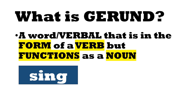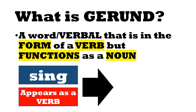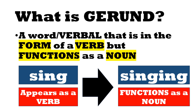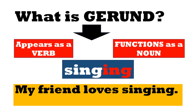So you have the word 'sing.' Generally it appears as a verb. A gerund is a verbal — a word that functions as a noun — and it's in the ING form of the verb, meaning it always has ING at the end. So you have the word 'singing.' Gerund is a word, one of the verbals, that appears as a verb and functions as a noun. That's why you have words like singing, reading, flying.